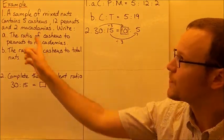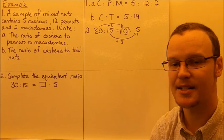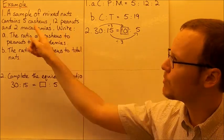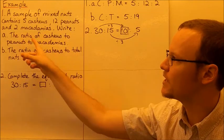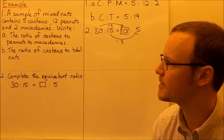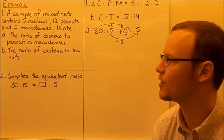Here we've got a couple of examples. Firstly, a sample of mixed nuts contains five cashews, twelve peanuts and two macadamia nuts. Write the ratio of cashews to peanuts to macadamia nuts, and the ratio of cashews to total nuts.